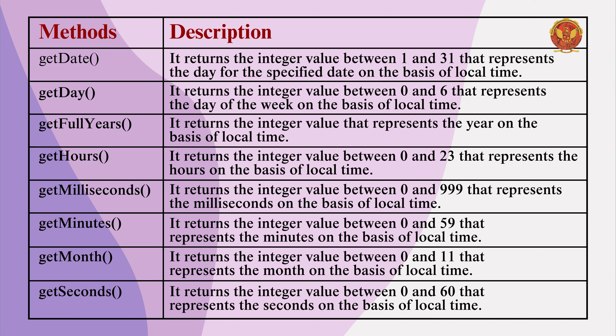The getHours method will return an integer value between 0 and 23, which represents the hours based on local time. The getMilliseconds method returns an integer value between 0 and 999, and it represents milliseconds based on local time.